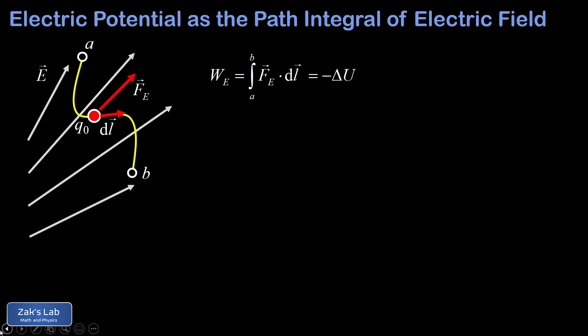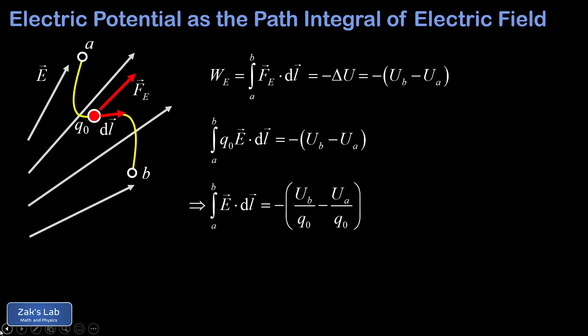That work is equal to the negative of the change in electric potential energy, or the negative of U_B minus U_A. Recalling that the electric force on a test charge is given by the charge times the electric field, we can rewrite the path integral by replacing F with q0*E. So we have the integral of q0 times E dotted into dL equals the negative of the change in the potential energy function. Dividing both sides by q0, we arrive at the path integral of E dotted into dL equals the negative of U_B over q0 minus U_A over q0. The potential energy divided by the size of the test charge is what we defined as the electric potential, so this simplifies to the negative of the change in the potential, or the negative of the potential difference.